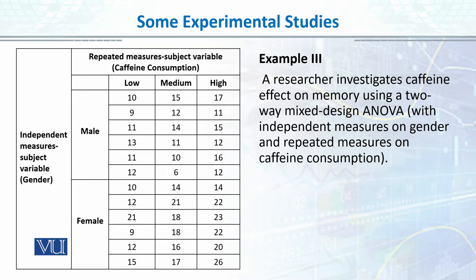So this is the example: the research investigates caffeine's effect on memory using a two-way mixed design ANOVA with independent measures on gender and repeated measures on caffeine consumption. Our variable has three levels: high, medium, and low.